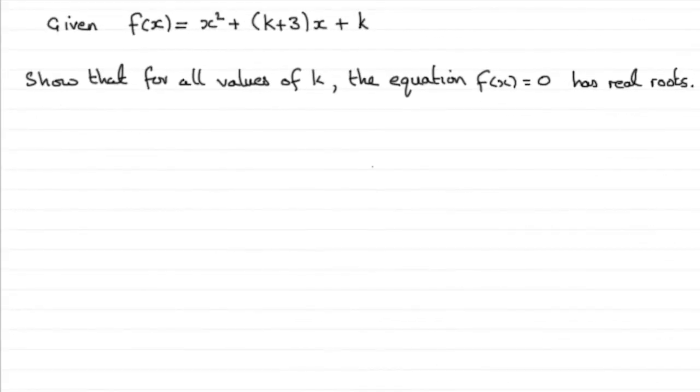Now, in this final part of the question, which is worth two marks, we've got to show that for all values of k, the equation f(x) = 0 has real roots.